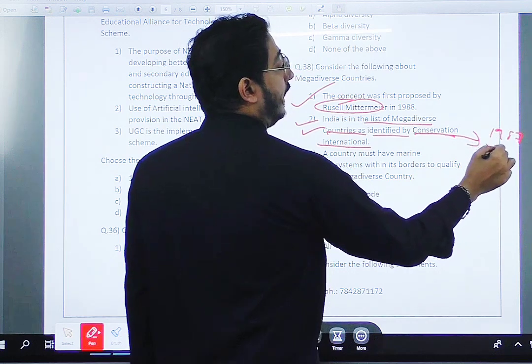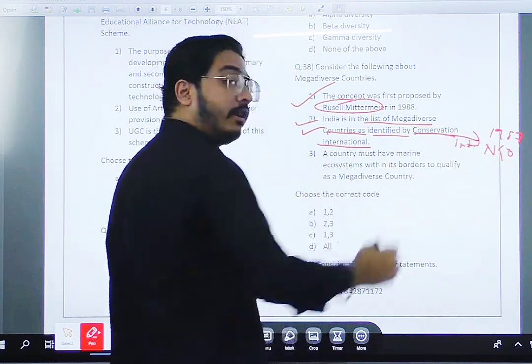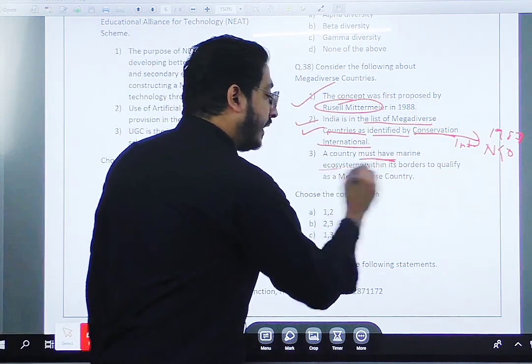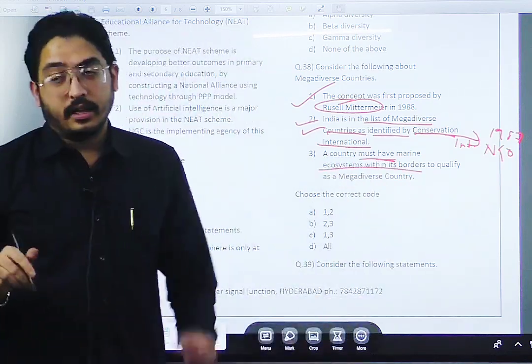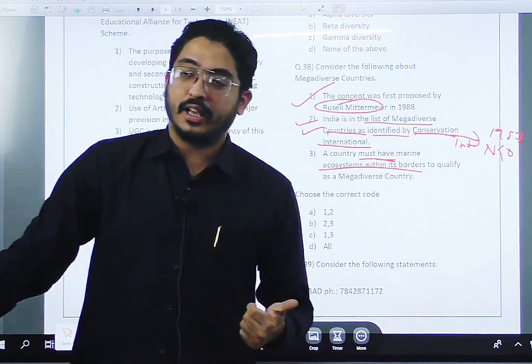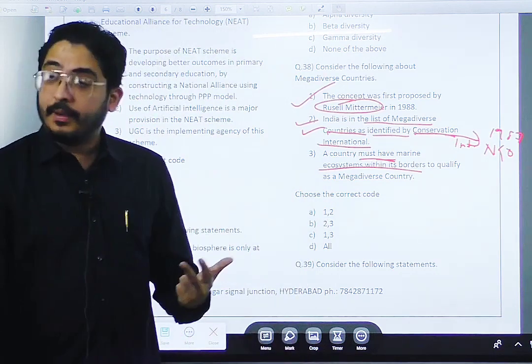A country must have marine ecosystems within its borders. There are three parameters: endemic parameter, threatened species, and the third parameter is that marine border has to be there.